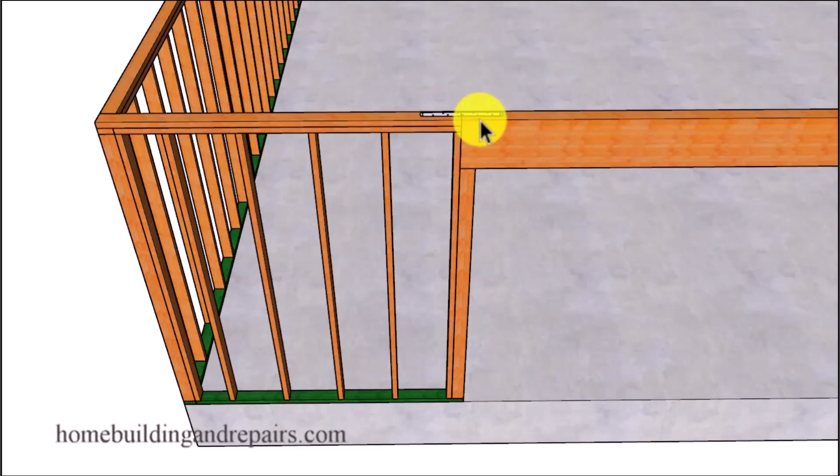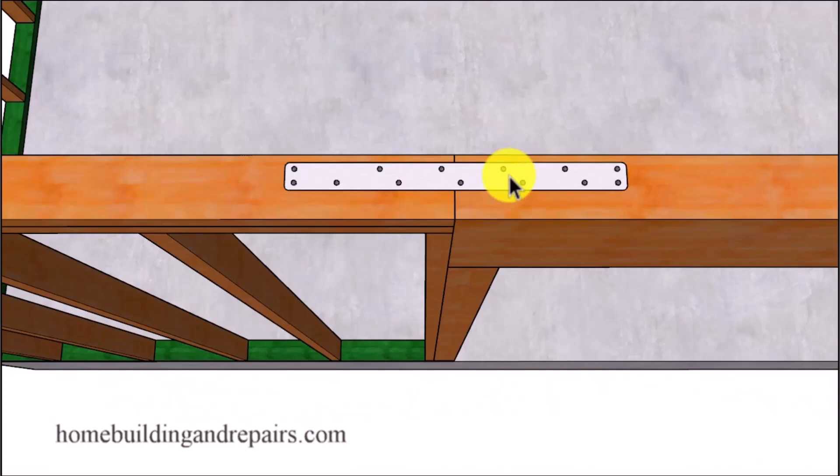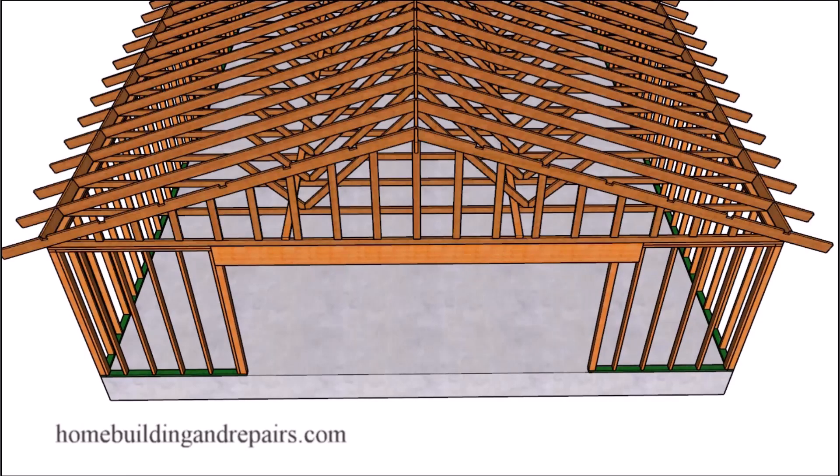And the other method here would be stopping the header at a king stud. And since the framing plates do not go through, we're going to need to install a strap. And you might want to move the strap over a little bit so that it is not in the way of the roof truss. Next up, let's go ahead and install our roof trusses.